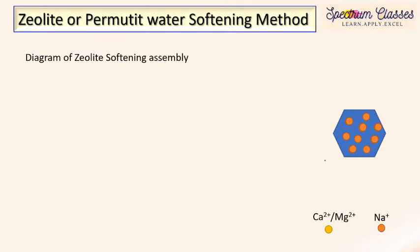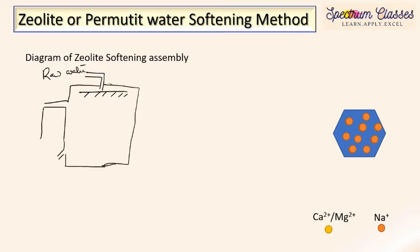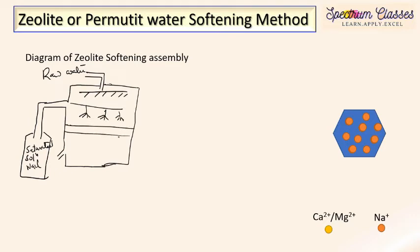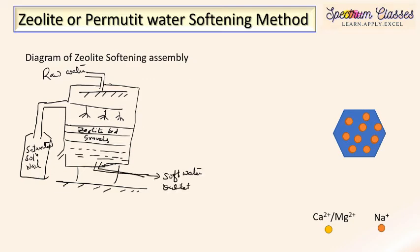Now, the zeolite softening assembly: raw water enters and is connected to brine water, which is the saturated solution of NaCl. There is a zeolite bed, followed by a gravel bed. This is the base unit supporting the assembly, and from here the soft water outlet flows out.